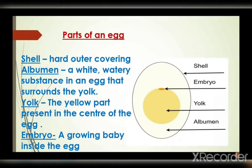We discussed the different parts of an egg: shell, embryo, yolk, and albumen. The shell is the hard outer covering. The embryo is the growing baby. The yolk is the yellow center part of an egg. The albumen is the white watery substance that surrounds the yolk.